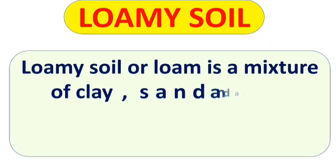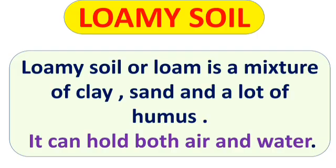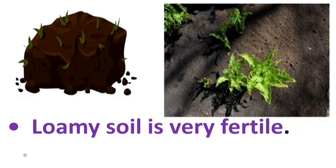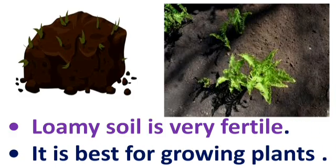Clay soil is also used for making bricks. The next soil is loamy soil. Loamy soil, or loam, is a mixture of clay, sand and a lot of humus. Humus is made up of dead and decaying parts of plants and animals. Loamy soil holds both water and air. Loamy soil is very fertile and it is the best soil for growing plants.